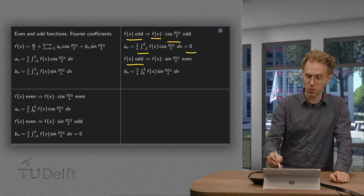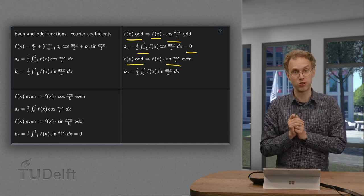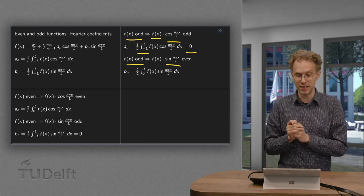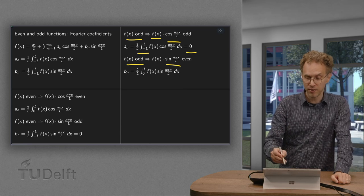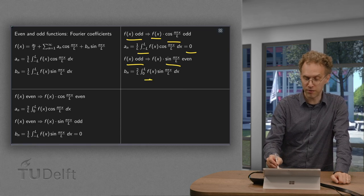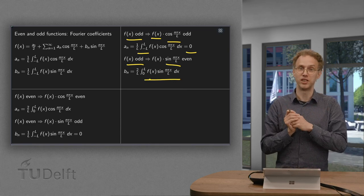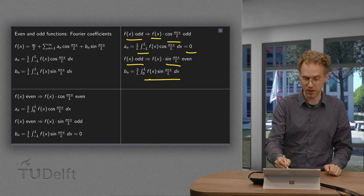Now if f of x is odd, the sine is also odd. So f times the sine is even. So for the b_n we have to compute an even function from minus l to l, which is twice the integral from 0 to l.